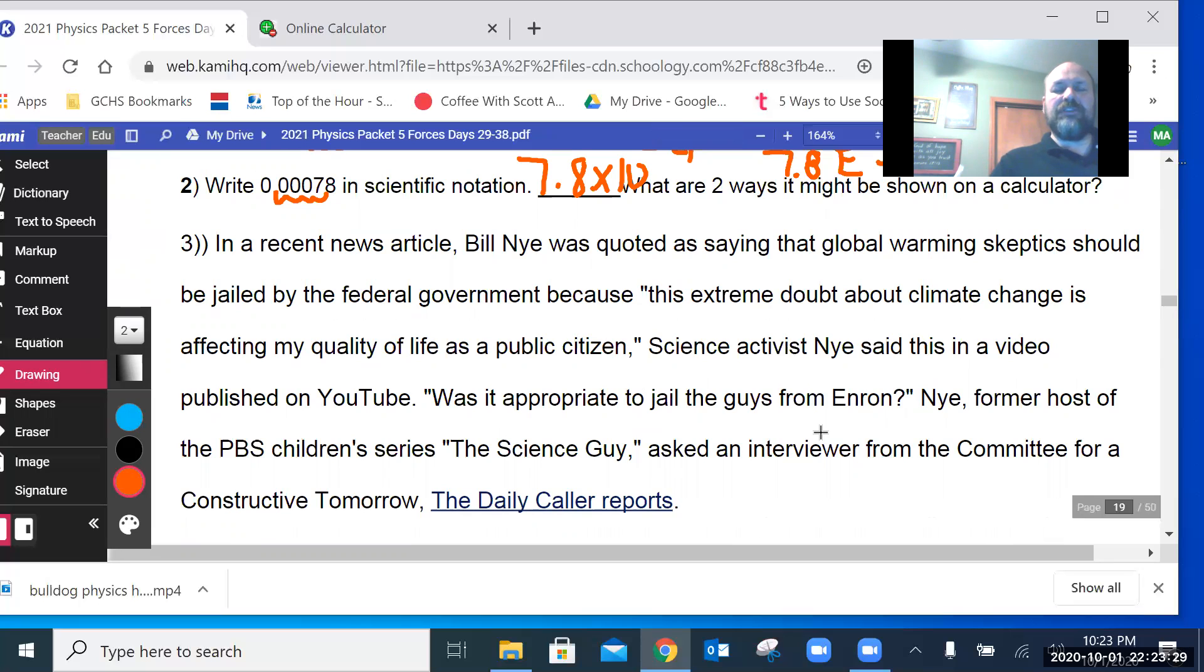Quote, was it appropriate to jail the guys from Enron? Nye, the former host of PBS series The Science Guy, asked an interviewer from the committee for Constructive Tomorrow. Enron were some folks who did some illegal stuff in the banking industry and caused severe financial problems around the country.